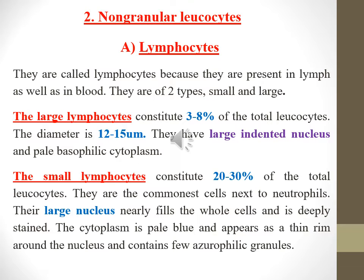The small lymphocytes constitute 20 to 30 percent of the total leukocytes — they are the most common cells next to neutrophils. Their large nucleus nearly fills the whole cell and is deeply stained. The cytoplasm is pale blue and appears as a rim around the nucleus, containing few azurophilic granules.